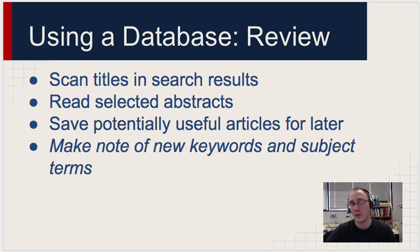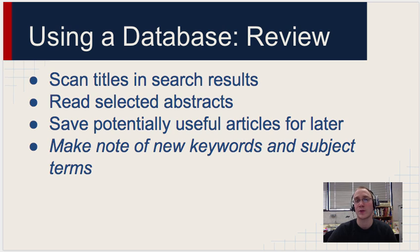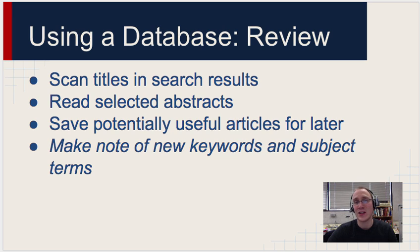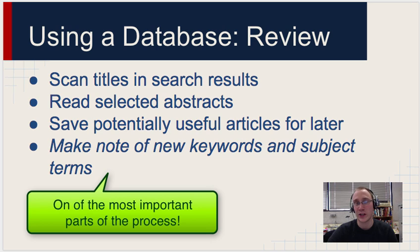The next step in using a research database is to review your results. When you get a list of results, you want to scan the titles. Once you scan the titles, if you see something that looks even remotely interesting, you're going to want to read the abstract for that. The abstract is essentially a brief summary of the information in an article. You want to save your potentially useful articles for later — that may mean emailing them to yourself or saving them to Google Drive.